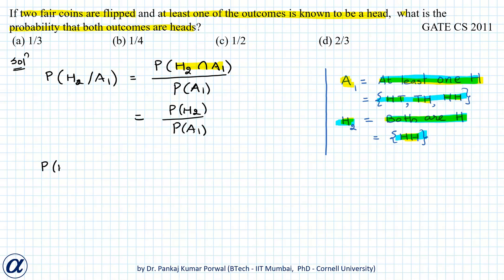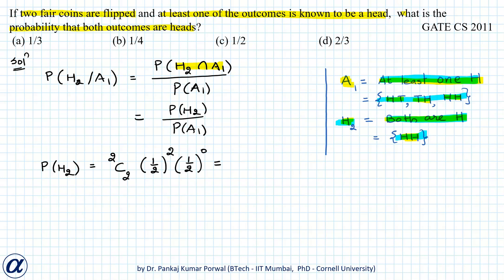P(H2), the probability that both outcomes are heads, can be written using the binomial probability formula as 2C2 times (1/2)^2 times (1/2)^0, which equals 1 times 1/4 times 1, giving us 1/4.